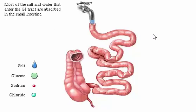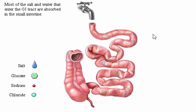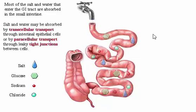Most of the salt and water that enter the GI tract are absorbed in the small intestine. Salt and water may be absorbed by transcellular transport through intestinal epithelial cells or by paracellular transport through leaky tight junctions between cells. Paracellular transport is passive and keeps the total osmolarity of the intestinal contents similar to the osmolarity of blood plasma.